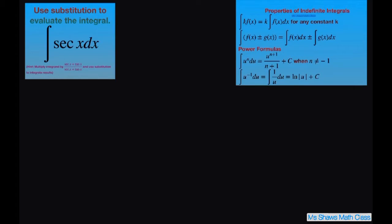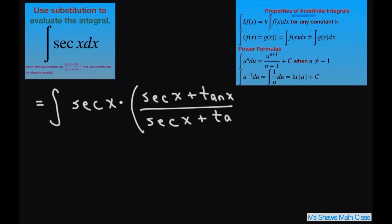We're going to have this equal to the integral of secant x times (secant x plus tan x) divided by (secant x plus tan x) dx. We're doing this so we can use substitution.